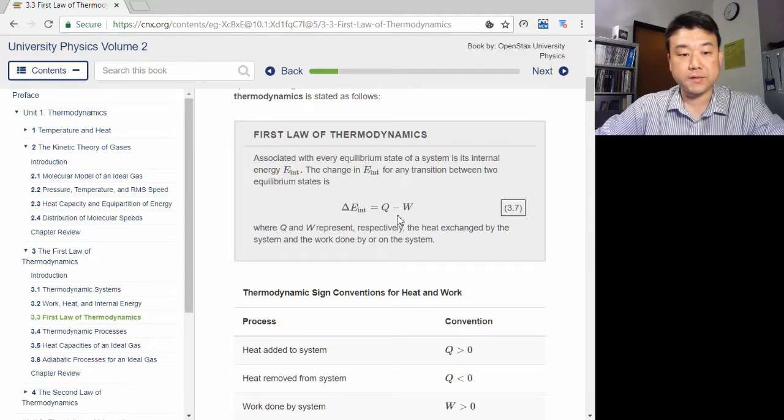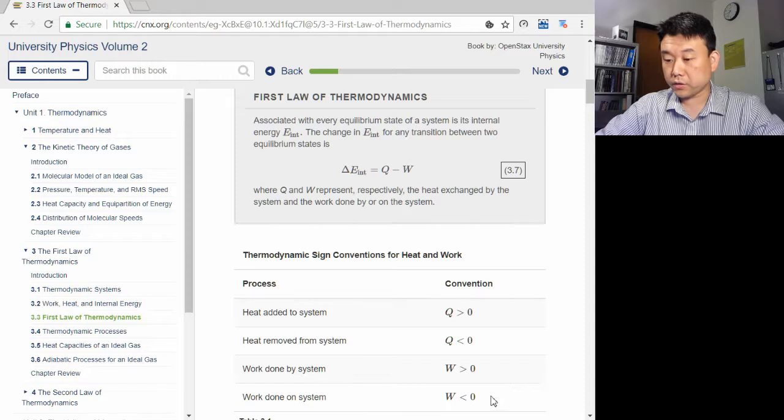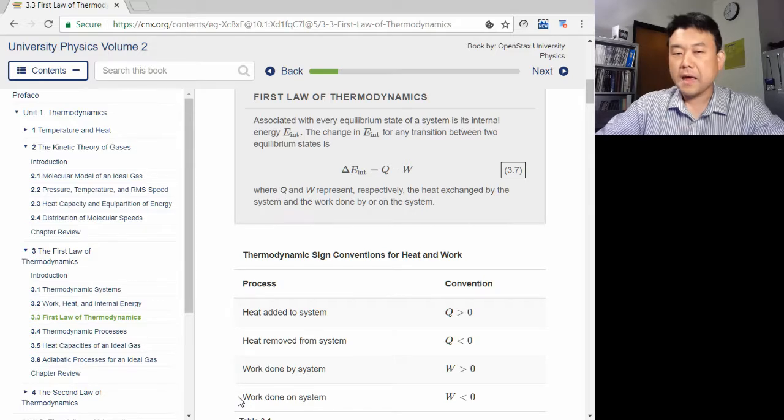So for an adiabatic process, Q equals zero, negative work, work done by the system leads to a positive change in internal energy.